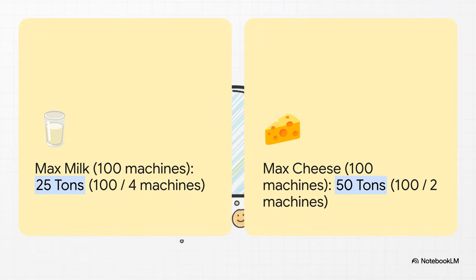But, of course, we can't ignore the machines. If we do the exact same exercise, but this time using our 100 machines as the only constraint, we get a completely different picture. With 100 machines, we can only make 25 tons of milk or 50 tons of cheese. See how these numbers are a lot lower? That's our first big clue.